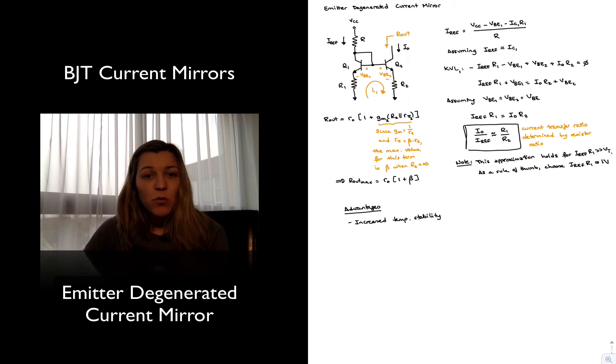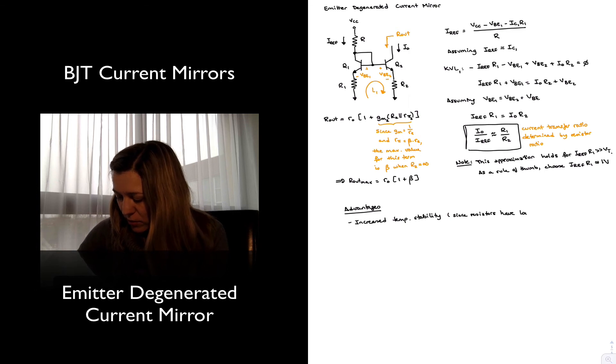In here, we have assumed them to be equal, but even if they were not completely equal, the fact that we have the resistors now will make the currents more dependent on the thermal matching between the resistors, or the value matching between resistors, which is more robust to variations in temperature. So increased temperature stability, since resistors have lower temperature coefficient than VBE.